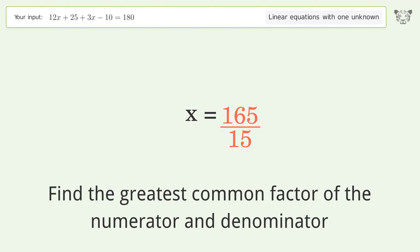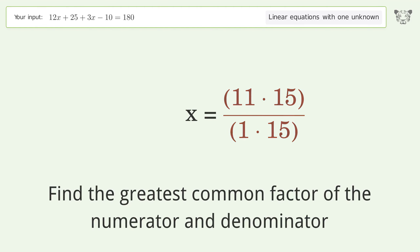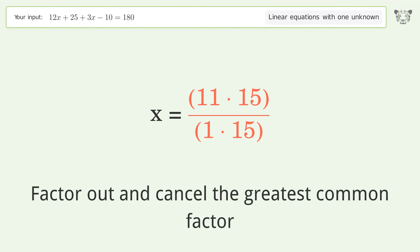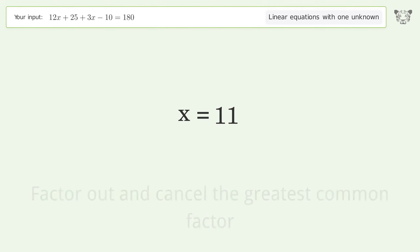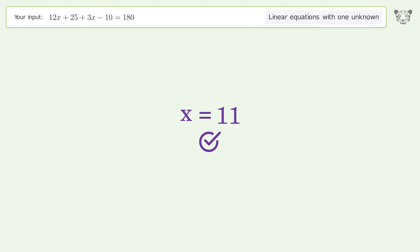Find the greatest common factor of the numerator and denominator. Factor out and cancel the greatest common factor. And so the final result is x equals 11.